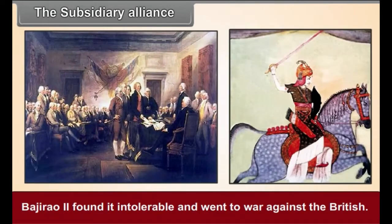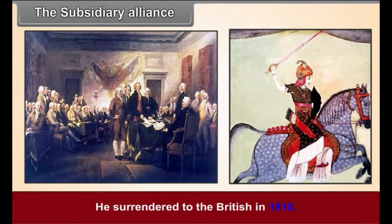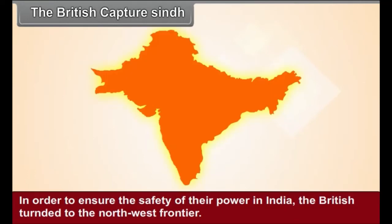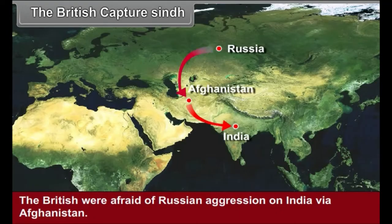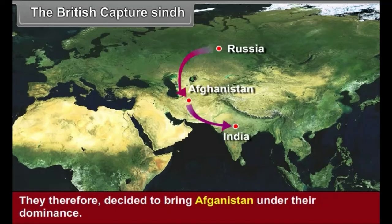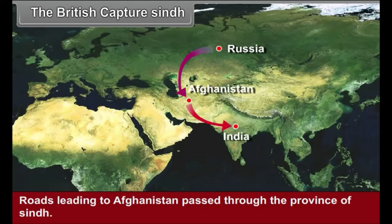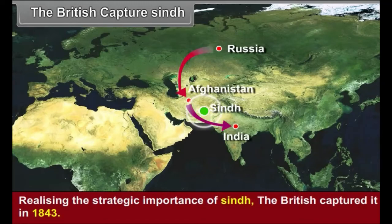Bajirao II found the growing British interference intolerable and went to war against the British. He was defeated and surrendered to the British in 1818. In order to ensure the safety of their power in India, the British turned to the northwest frontier. The British were afraid of Russian aggression on India via Afghanistan and decided to bring Afghanistan under their dominance. Roads leading to Afghanistan passed through the province of Sindh. Realizing the strategic importance of Sindh, the British captured it in 1843.